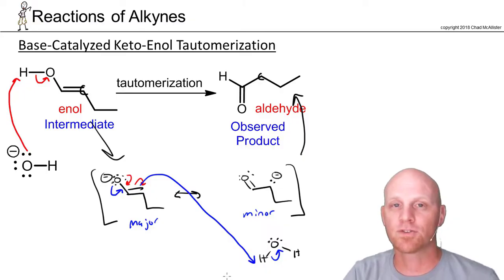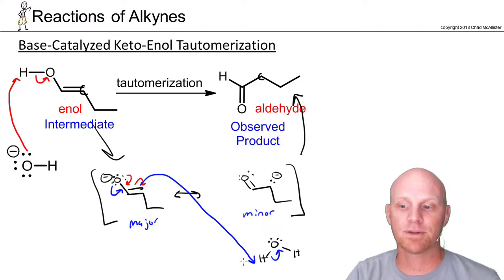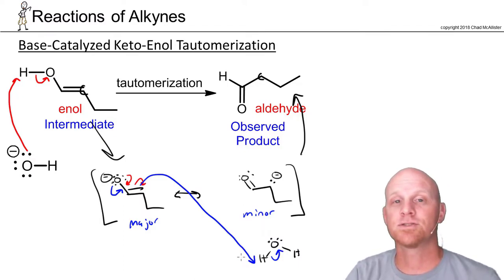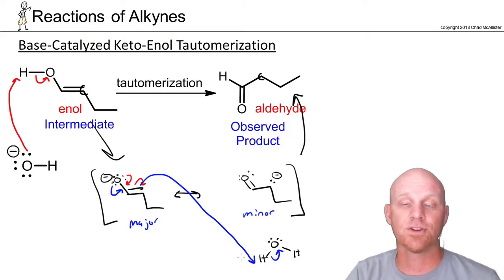These are two very important mechanisms to know for this chapter, probably the most likely you're going to be tested on. You should know it both ways. I've shown it going from enol to either ketone or aldehyde, but you should know it going backwards as well. It's totally reversible, and you should know it both ways.